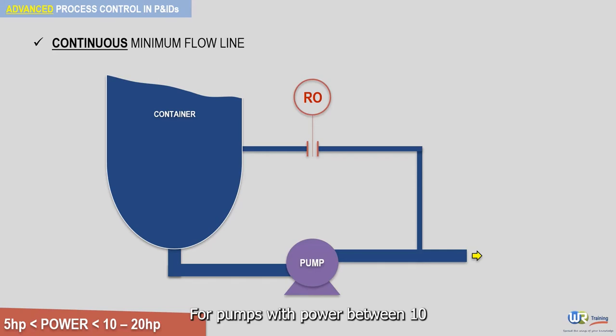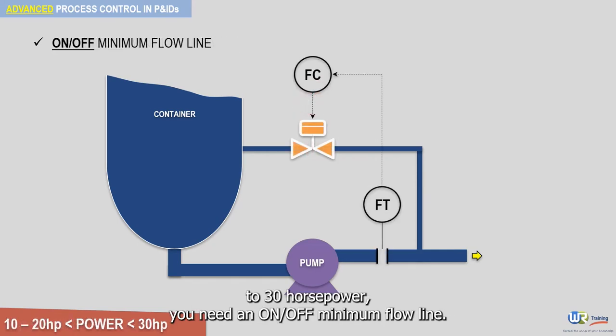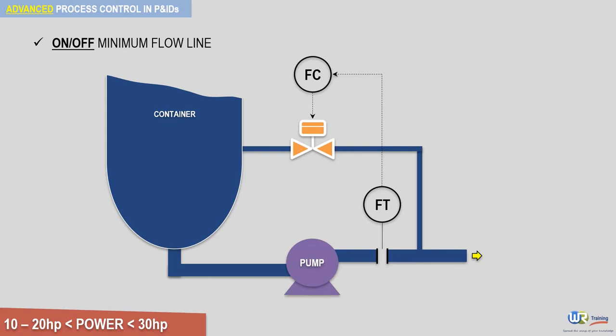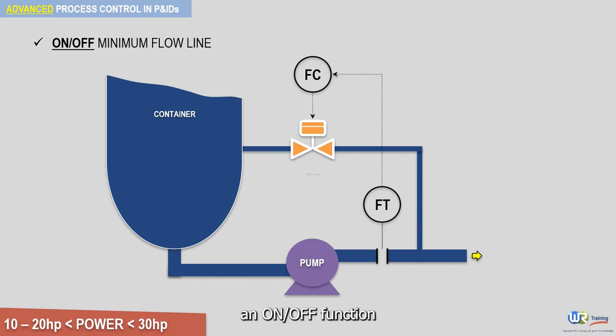For pumps with power between 10 to 30 horsepower, you need an on-off minimum flow line. This is a cheaper option than installing a control valve. In this case, the flow control loop will just provide an on-off function.